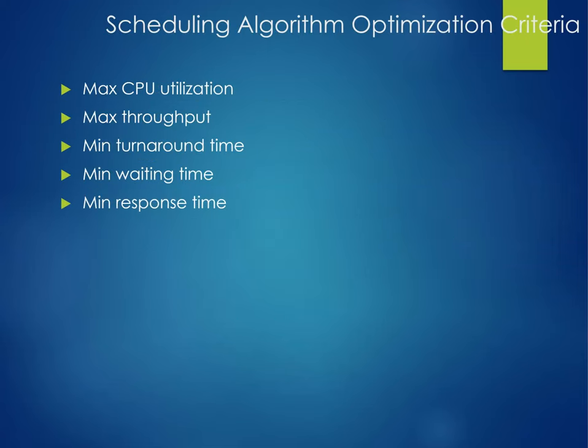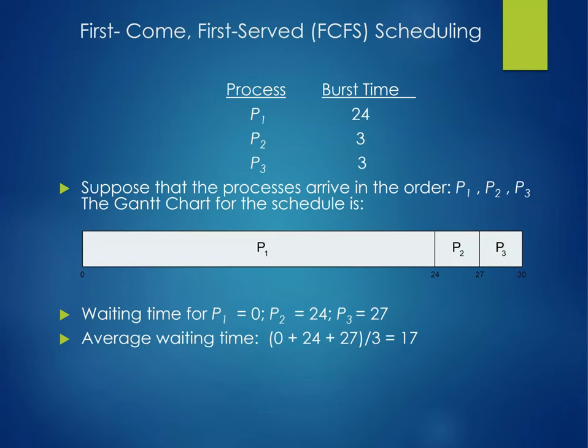Scheduling algorithm optimization criteria: maximize CPU utilization, maximize throughput, minimize turnaround time, minimize waiting time, and minimize response time. Our first algorithm we're going to talk about is first-come, first-served scheduling — FCFS.